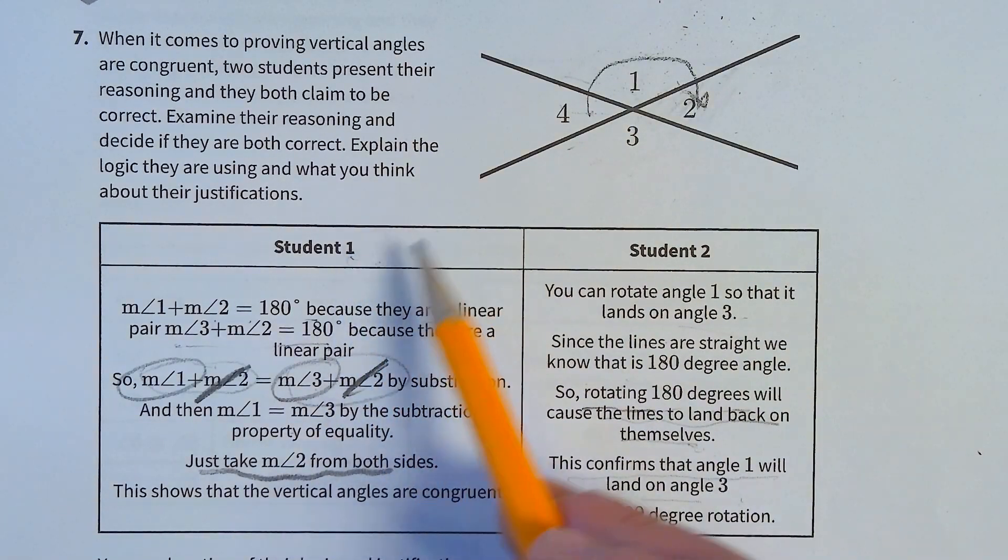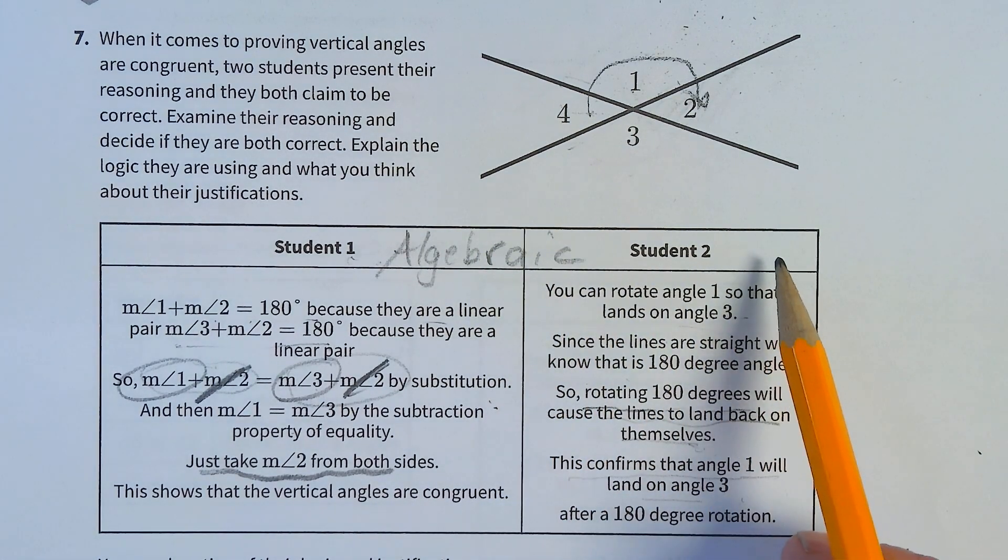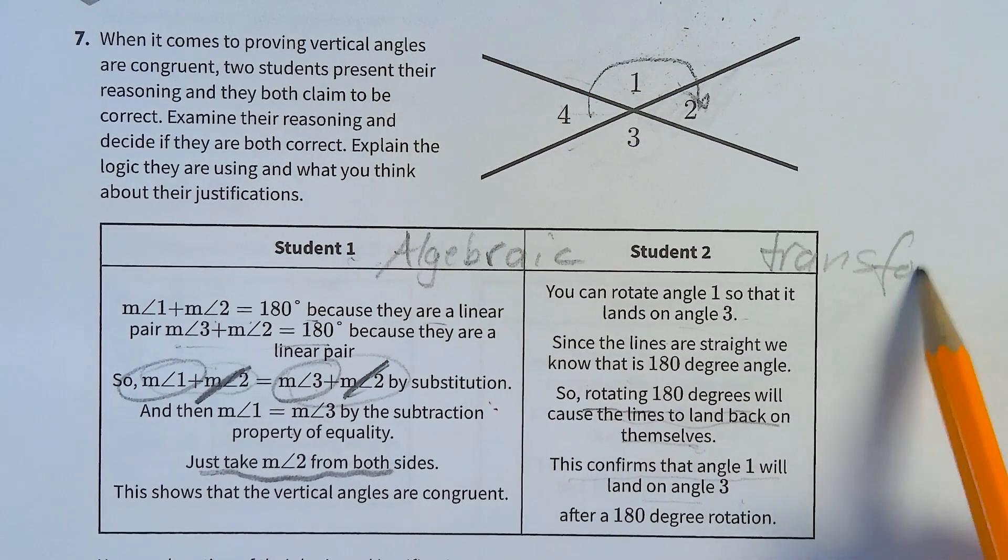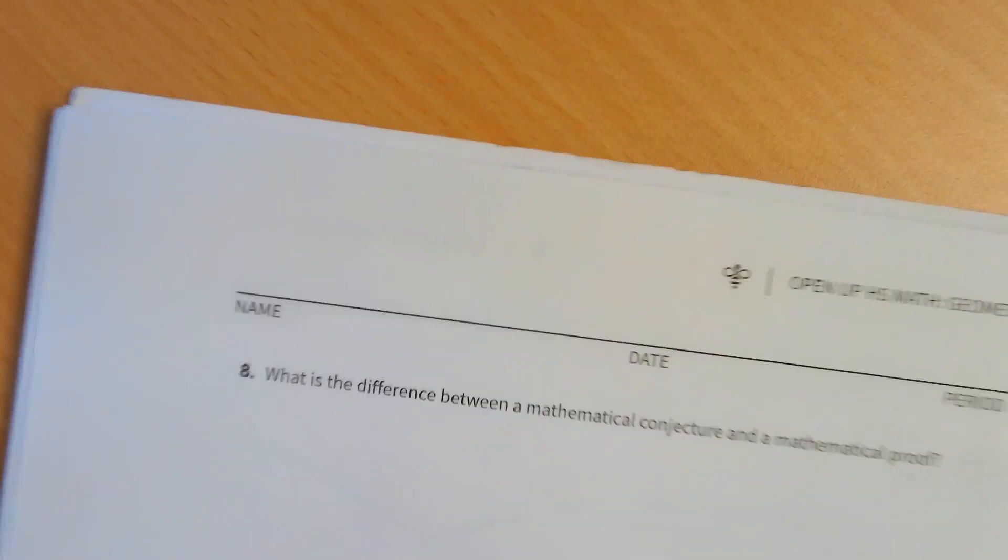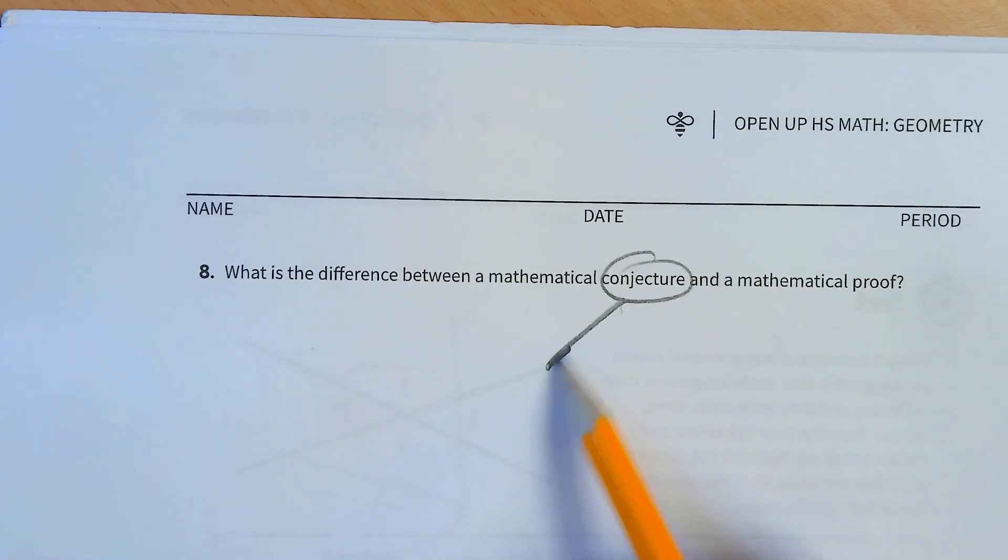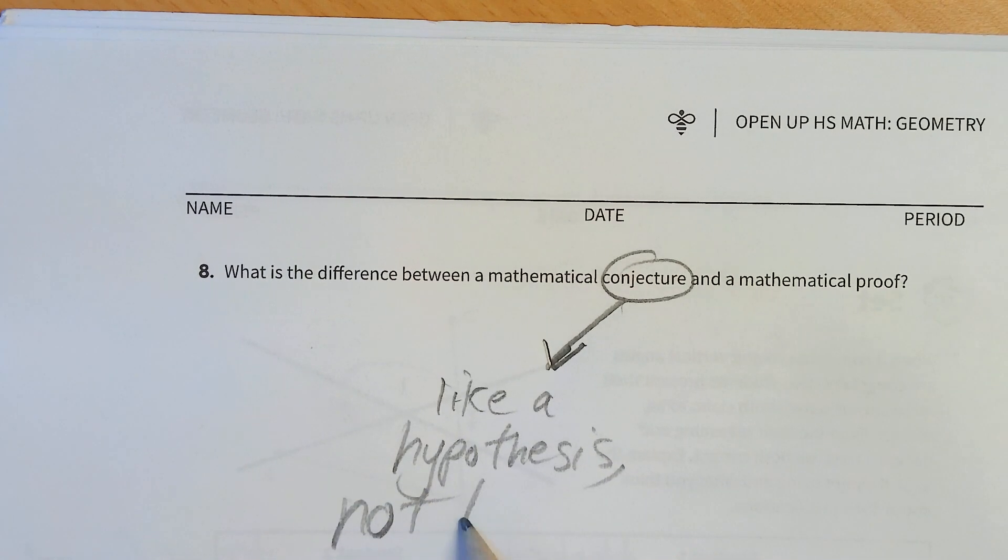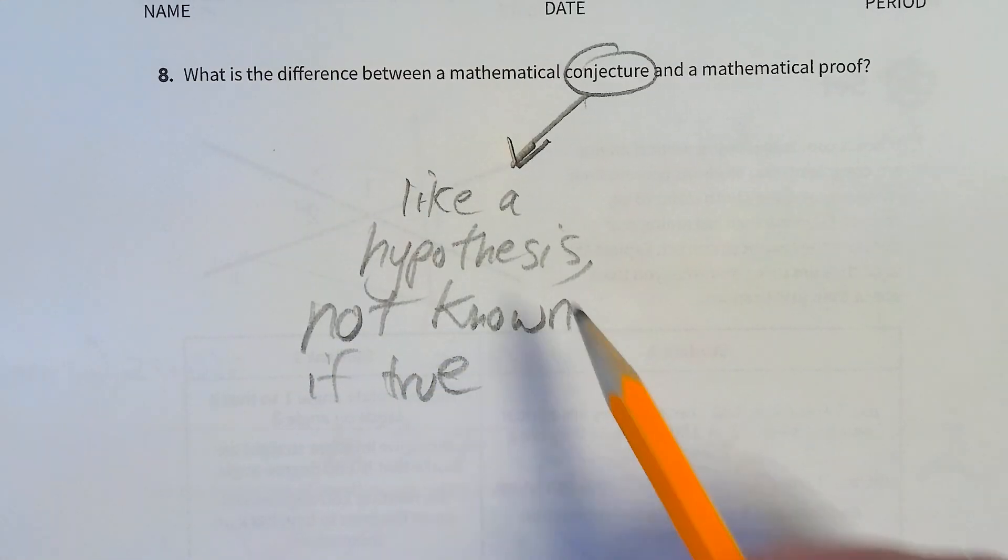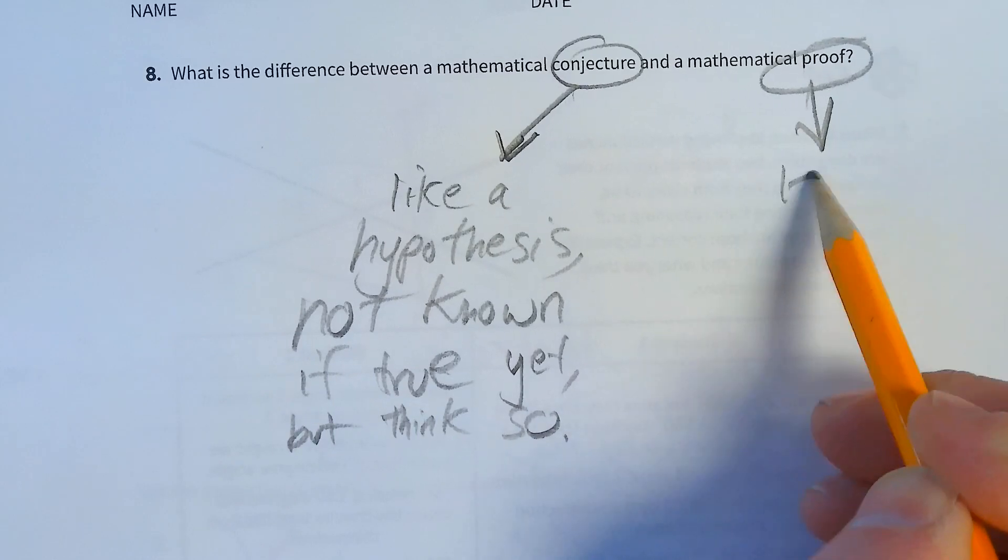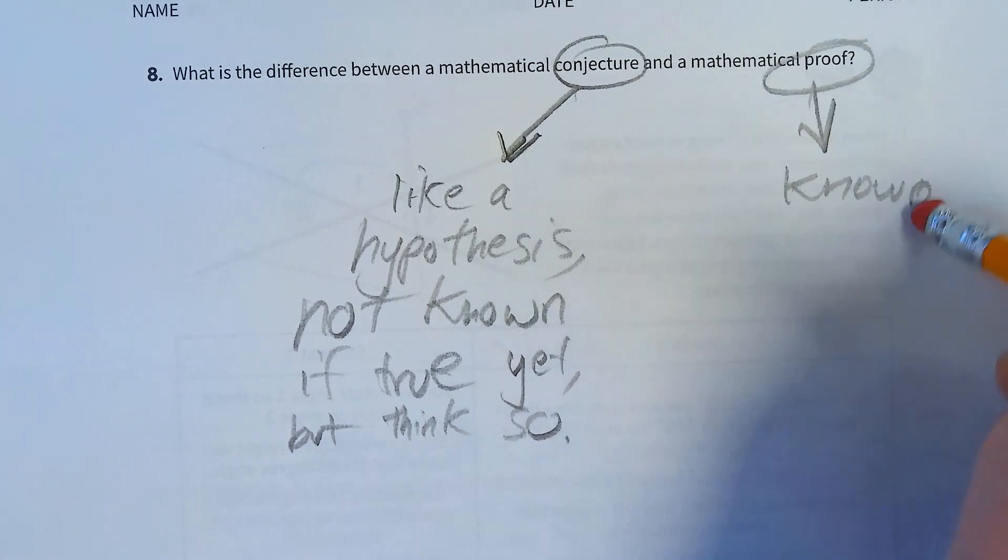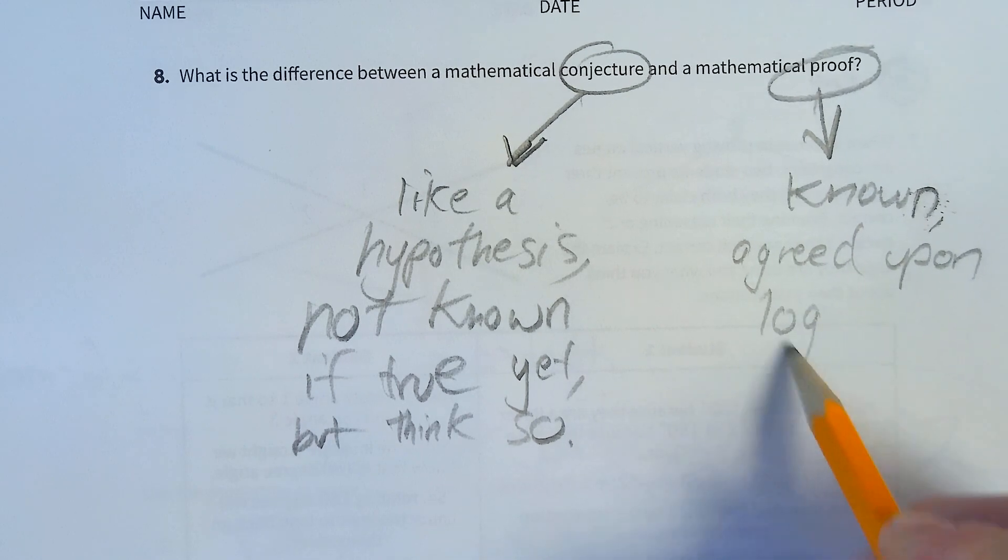Student 1 uses an algebraic approach. Student 2, transformational approach. What is the difference between mathematical conjecture and mathematical proof? Conjecture, like a hypothesis. Not known if true yet, but think so. Proof is known, agreed upon logical truth.